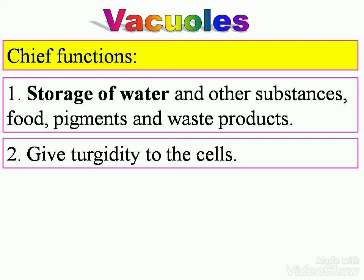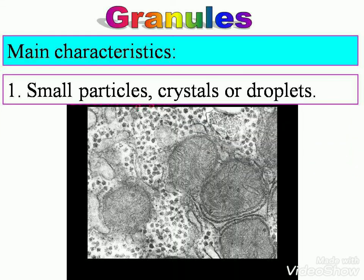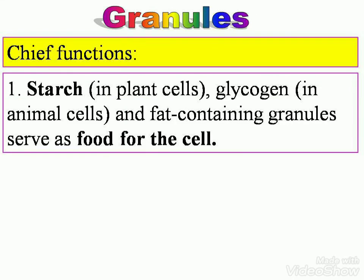Let's look at granules. Main characteristics: they are small particles, crystals, or droplets — you can have a look at the picture here. Chief functions: starch in plant cells, glycogen in animal cells, and fat-containing granules serve as food for the cell.